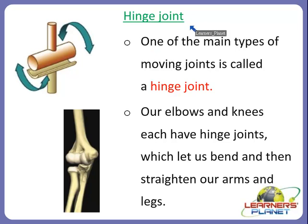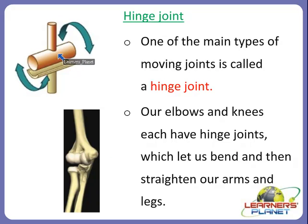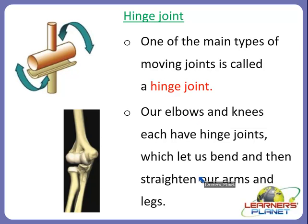Another kind of joint is the hinge joint, which is very helpful in straightening our arms and legs. The ball and socket joint is helpful at shoulders and hips, but the hinge joint is the one that helps with arms and legs. Our elbows and knees each have hinge joints, which allow us to bend and straighten our arms and legs.